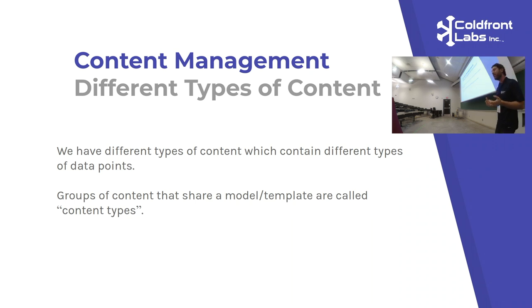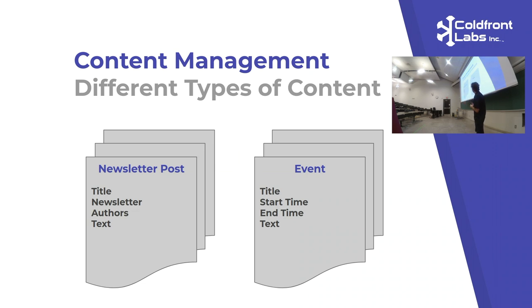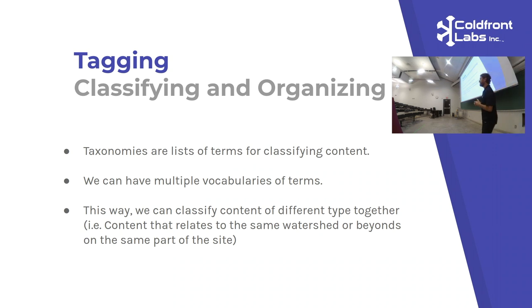The other thing we can do with Drupal is set up a content model, modeling different kinds of content that the CMS stores. In Drupal, we call these content types. We can define a newsletter, which has a title, a newsletter body, the authors, and the text of the newsletter. And we have something very different — an event — which has a title, a start time, an end time, and a body of text. So we have structure for our content and a model for how to use it.